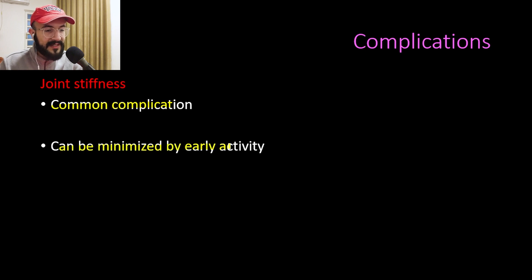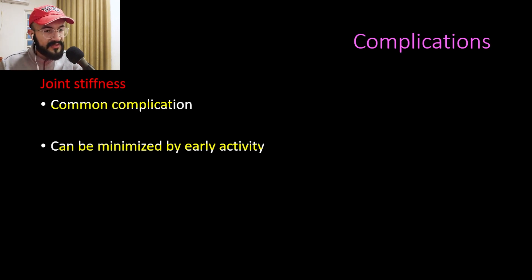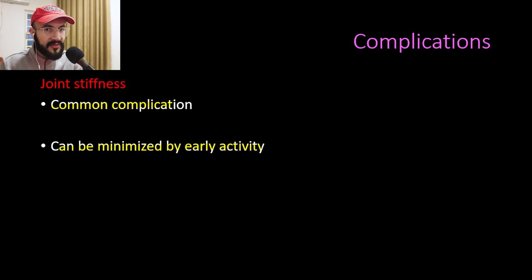Finally, joint stiffness is a common complication that can be minimized by early activity. This concludes the video on humeral shaft fractures, which is part of the Shoulder and Arm Trauma Master Class.